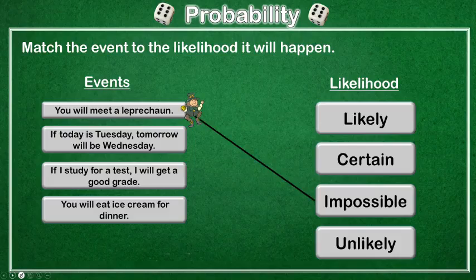The second event: if today is Tuesday, tomorrow will be Wednesday. Well, if today is Tuesday, tomorrow has to be Wednesday. That's certain.